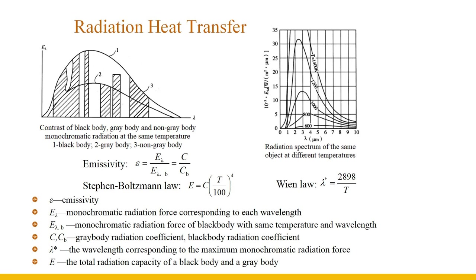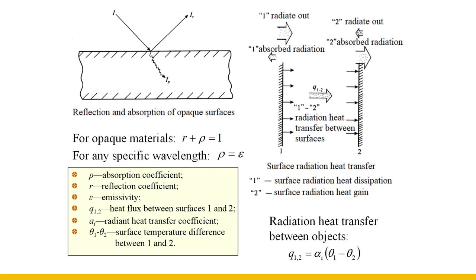In building thermal engineering, radiation with a wavelength greater than 3 micrometers is called long-wave radiation, and radiation less than 3 micrometers is called short-wave radiation. The surface temperature of the sun is about 6000 Kelvin, and the wavelength corresponding to the maximum monochromatic radiation force equals 0.483 micrometers, which is less than 3 micrometers, so solar radiation belongs to short-wave radiation. Any object not only has the ability to emit thermal radiation outward, but also absorbs and reflects external radiation, and some materials also have transmission.